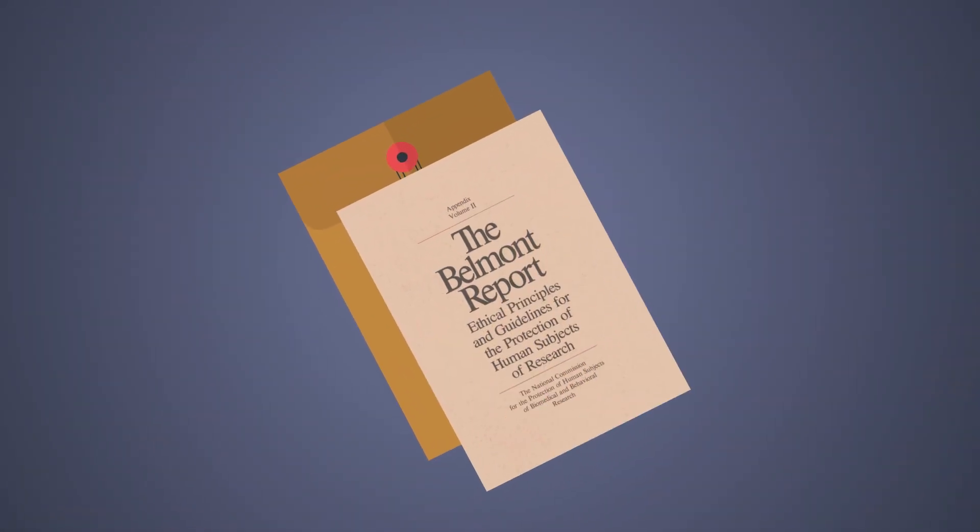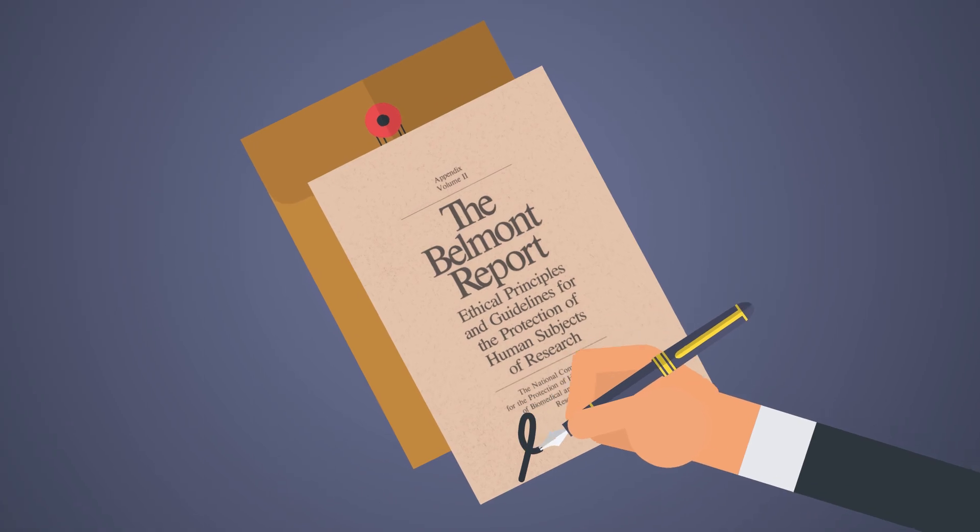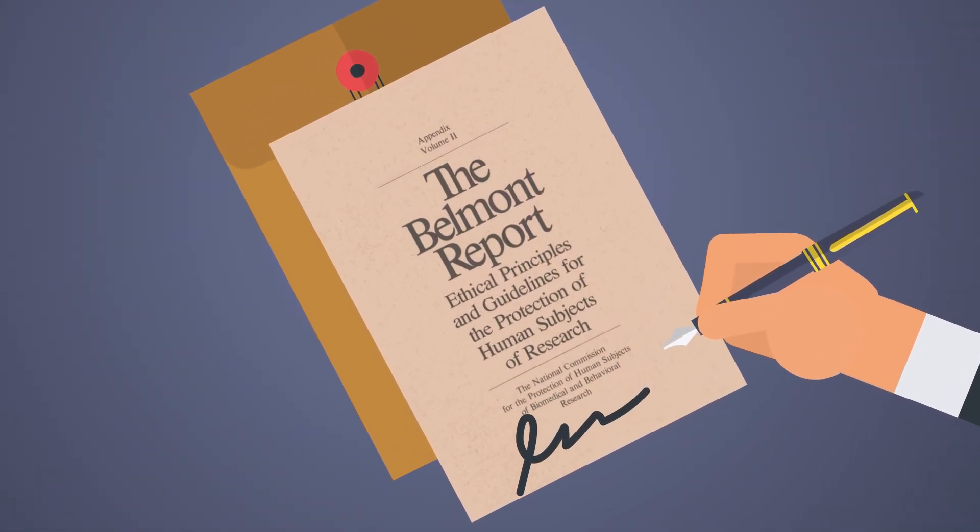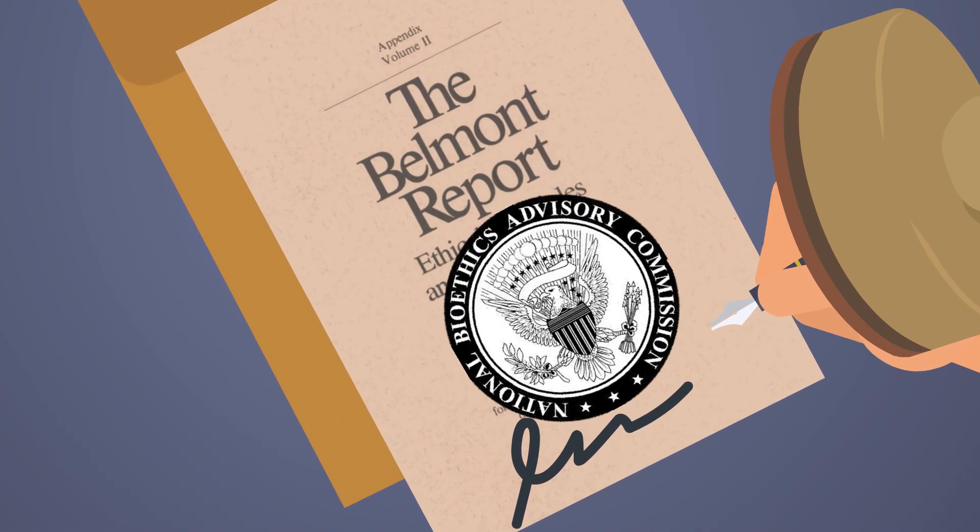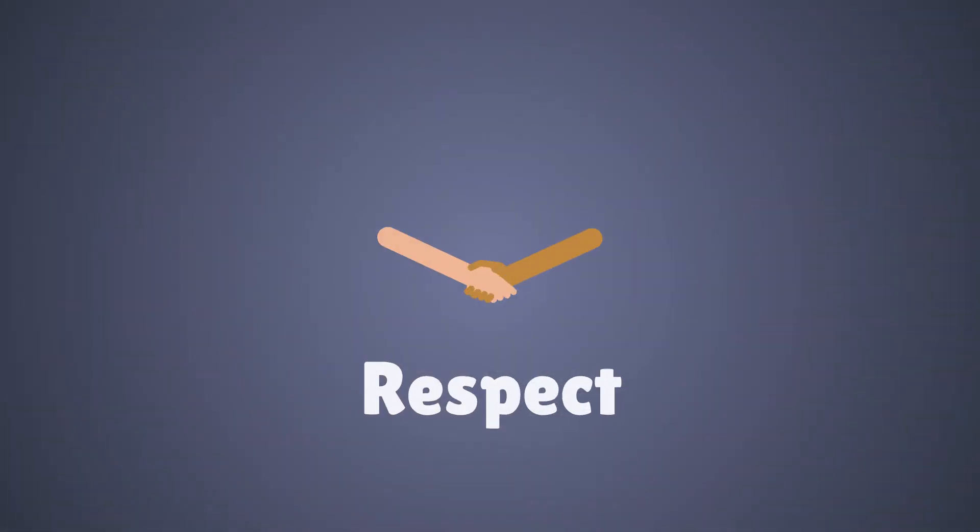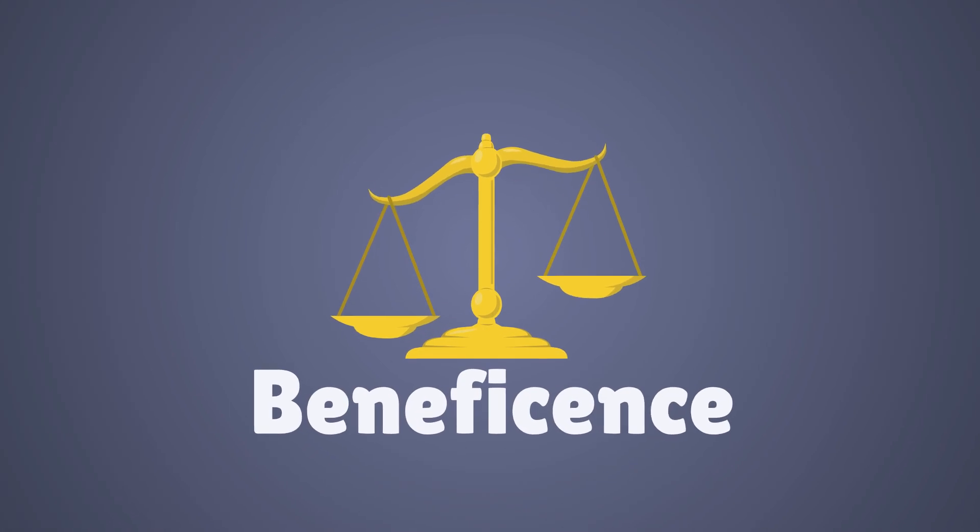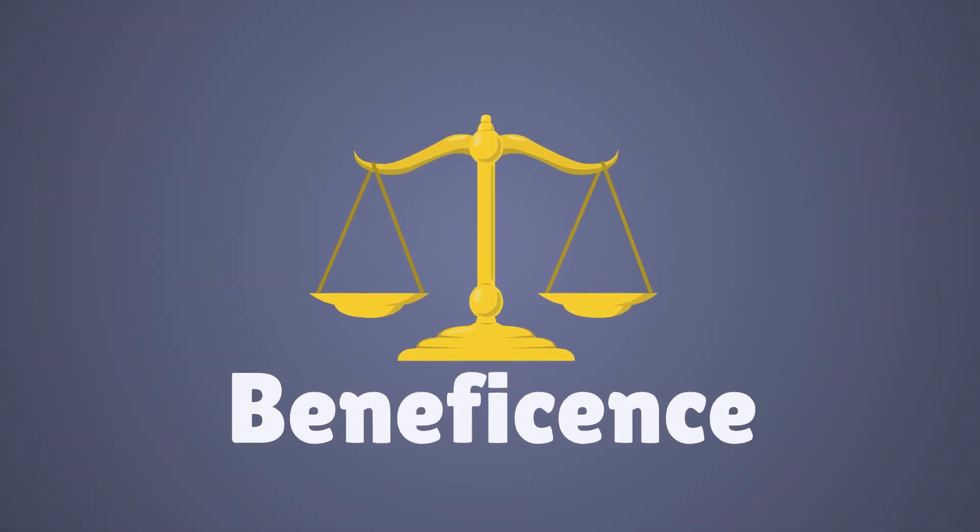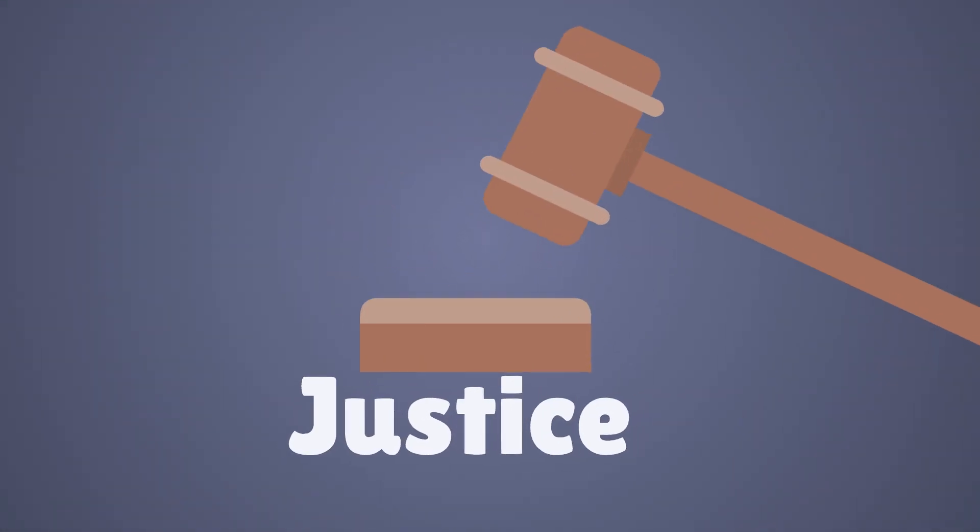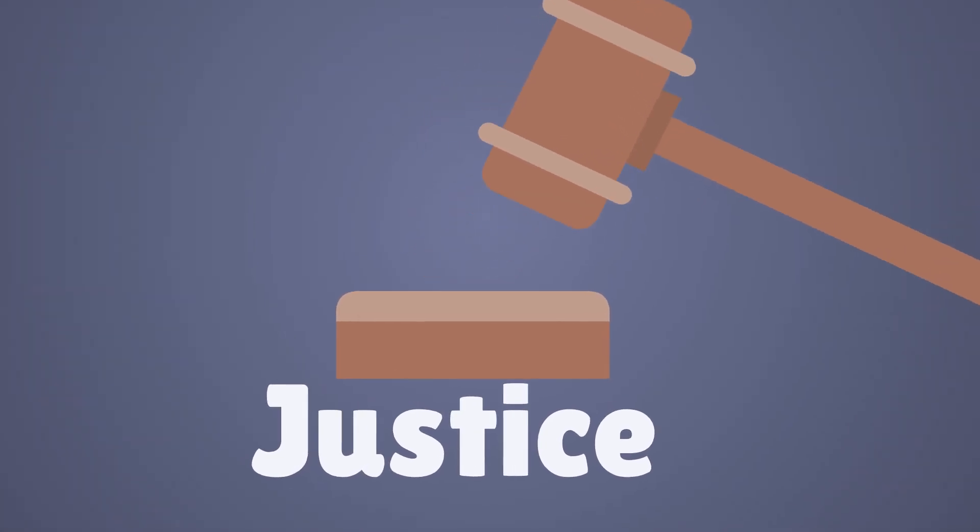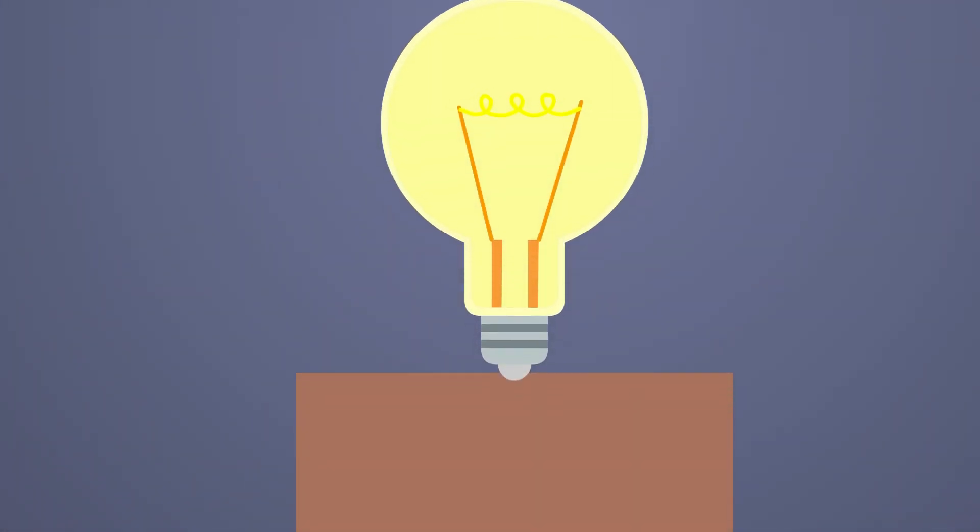Then the Belmont Report was established in 1979, summarizing the ethical principles and guidelines of the Commission for Protection of Human Participants of Biomedical and Behavioural Research. These were respect for persons, autonomy and informed consent, beneficence, the risks must not outweigh the benefits, justice, fairness, equality and equity, and research integrity.